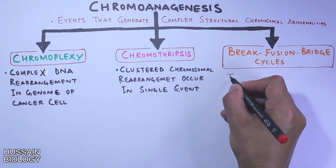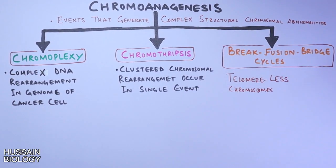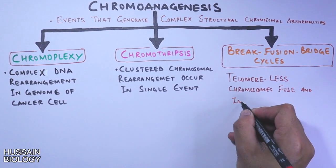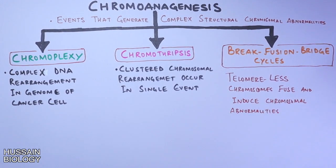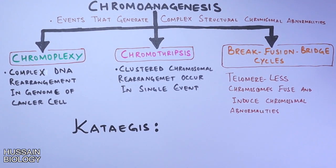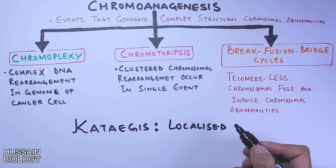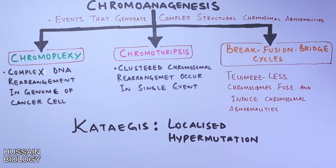Break-fusion-bridge cycles involve telomere-less chromosomes fusing together, which induces chromosomal abnormalities. Another term encountered in cancer study is kataegis, which involves localized hypermutation in a small region of DNA.